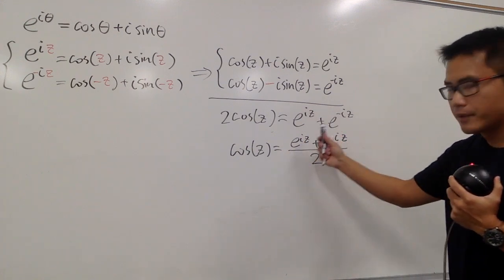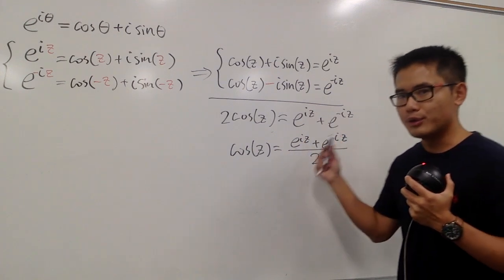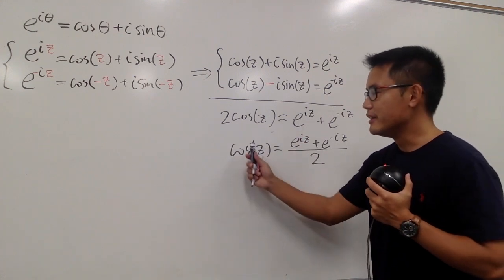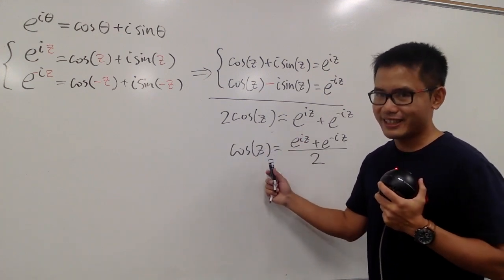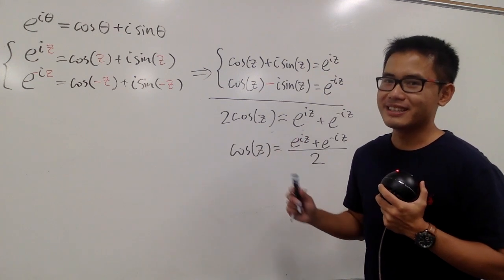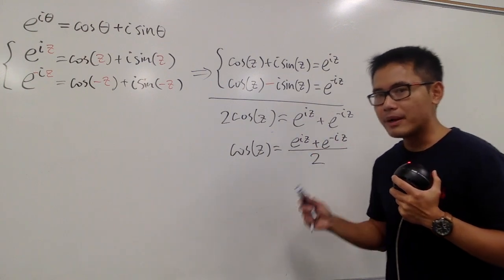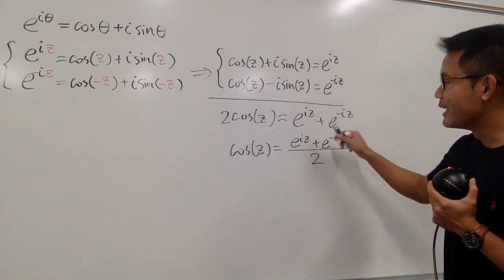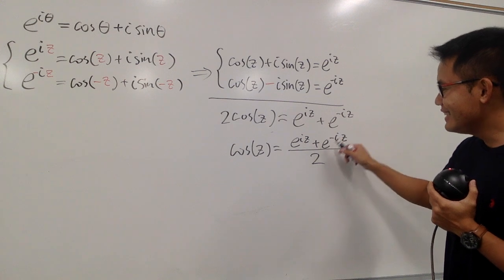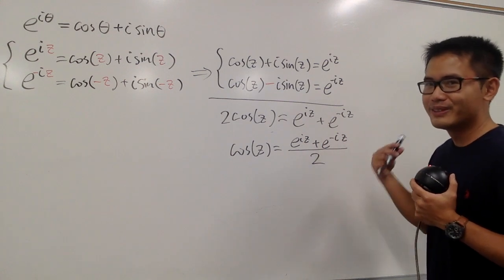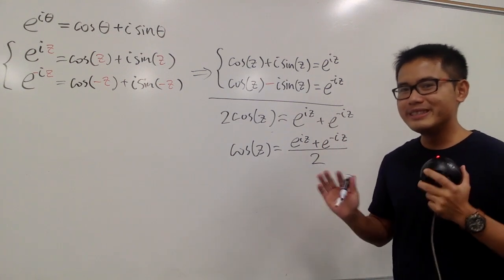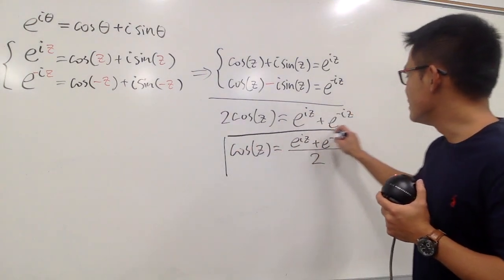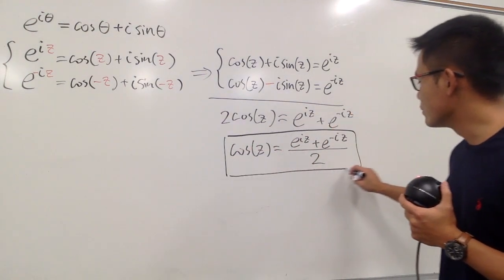Does this form look familiar? It should, because it is very similar to cosh x, the hyperbolic cosine. Hyperbolic cosine x is e to the x plus e to the negative x, all over two — really, really similar. So this is cosine z in the complex world.